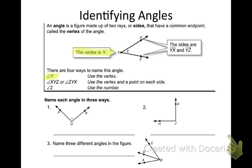Angle XYZ and angle ZYX — the big thing to note is what is in the middle of both of those. I have XYZ or ZYX. What letters are in both? Y. Anytime you do that, you always have to make sure you put your vertex in the middle. Anytime you label them with three different letters, make sure the vertex is that middle letter. Or if they use a number, you can say that number. If I say angle two, I know that's the angle where the two is denoted.